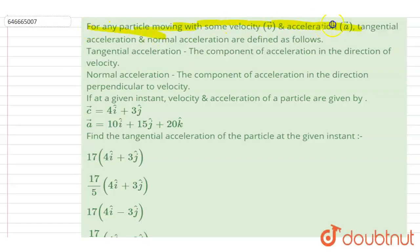Hello everyone. For any particle moving with some velocity v vector and acceleration a vector, tangential and normal acceleration are defined as follows: tangential acceleration is the component of acceleration in the direction of velocity, and normal acceleration is the component of acceleration perpendicular to velocity.